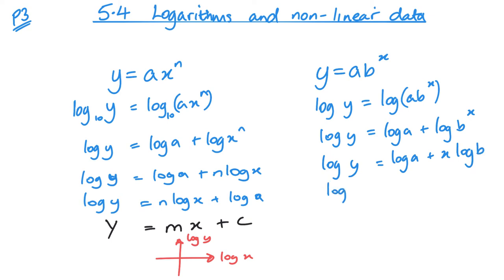And then a bit of rearranging, so log y equals, now I'm going to write it like this, log b times x plus log a. Now I would actually write this as x log b, but I'm just doing this just to show you exactly where it matches up. So y equals mx plus c. What you can see is that y is log y, the gradient is log b, x is x, and c is log a. So what that means is that I'm actually plotting x against log y, because you can see the x is still x in this case.